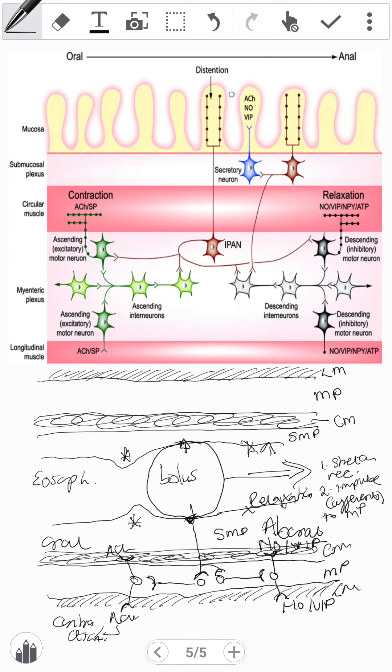And if we were to liken it to what is happening out here, it's really the same. Distention occurs over here and we have the afferents that go and synapse in the myenteric. And we have the excitatory portion this side, and on the descending interneurons, these are inhibitory.